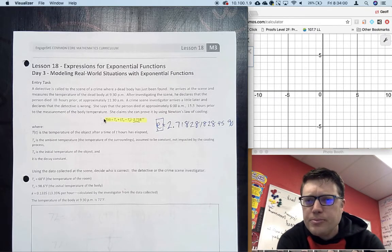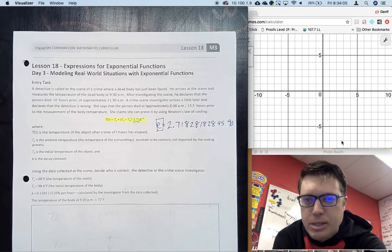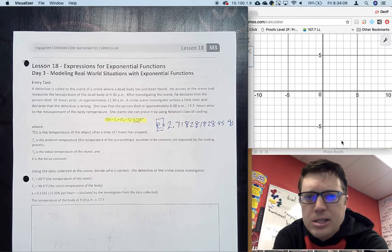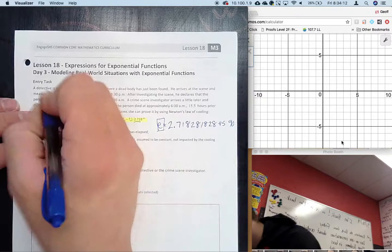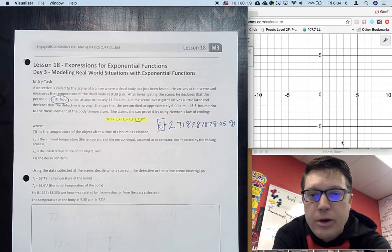A detective was called to the scene of a crime where a dead body had just been found. He arrives and measures the temperature of the dead body at 9:30 PM. After investigating, he declares that the person died 10 hours prior, at approximately 11:30 AM.